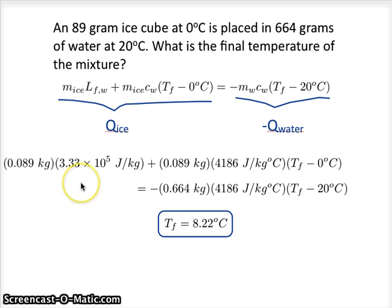So that is how we would do this problem. One other thing to notice for our Q ice side, once the ice melted, it was the specific heat of water we wanted to use. Ice does have a different specific heat, so this is a mistake you could make if you used the wrong specific heat here.